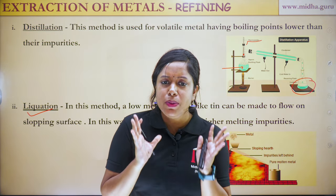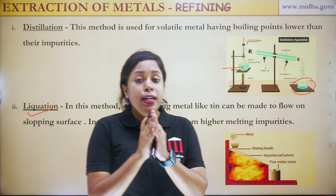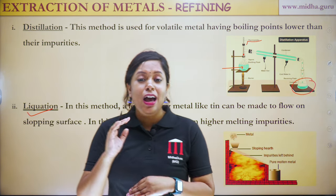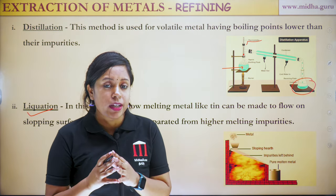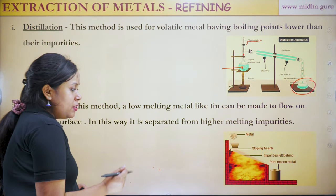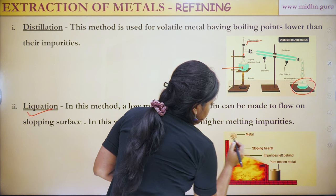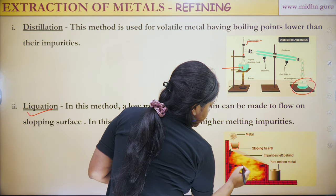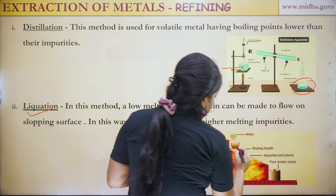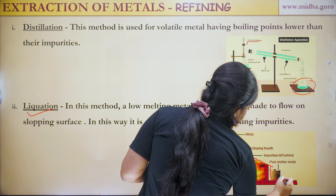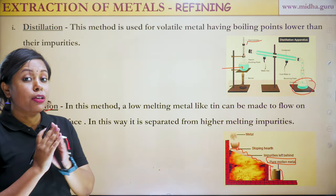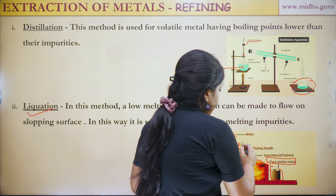The second refining method is liquation. This method depends upon the difference in melting points of the metal and impurities. If the metal has a lower melting point than its impurities, we use liquation. The metal with impurities is heated — since the metal has a lower melting point it melts first, flows, and is collected as pure molten metal, while impurities with higher melting points are left behind.